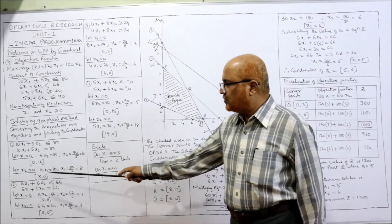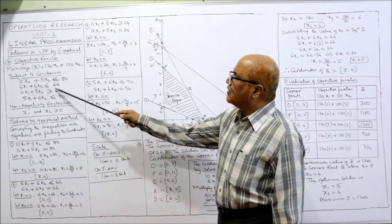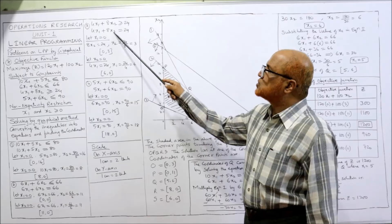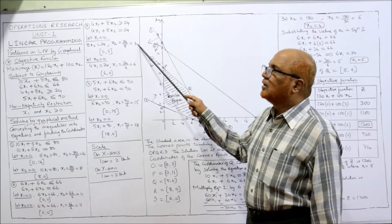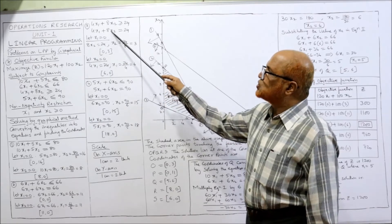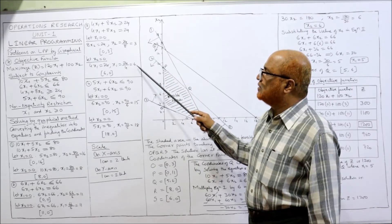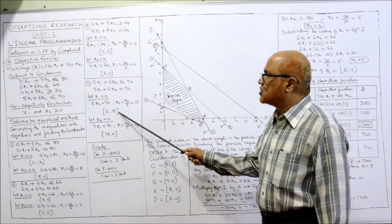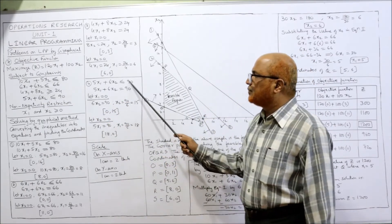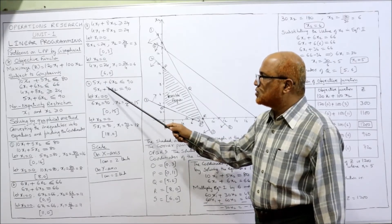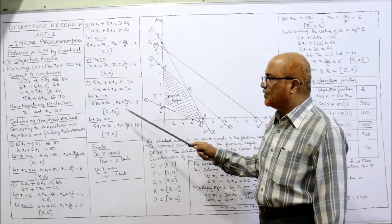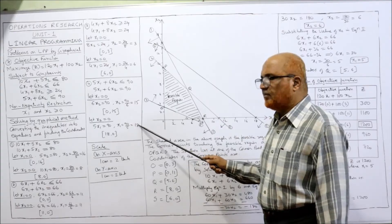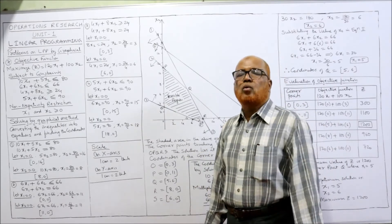Third equation: 4x1 plus 8x2 greater than or equal to 24, making it an equation. When x1 equals 0: 8x2 equals 24, x2 equals 3. Coordinates: (0, 3). When x2 equals 0: 4x1 equals 24, x1 equals 6. Coordinates: (6, 0). Fourth and final equation: 5x1 plus 6x2 equal to 90. When x1 equals 0: 6x2 equals 90, x2 equals 15. When x2 equals 0: 5x1 equals 90, x1 equals 18. Coordinates: (0, 15) and (18, 0). All coordinates for the four equations are now calculated.